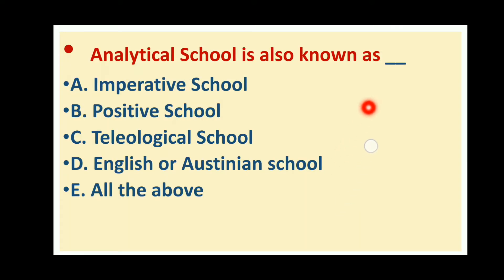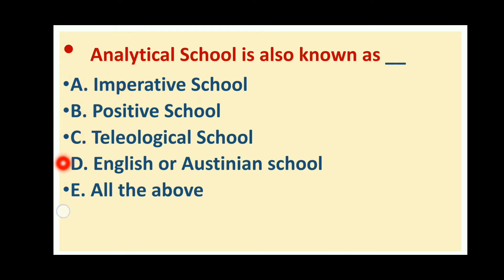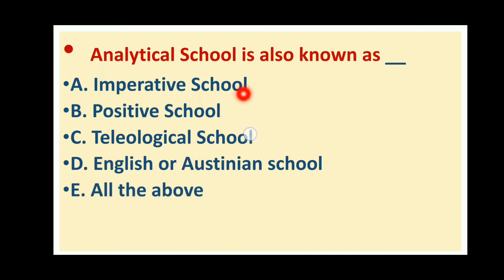Analytical school is also known as — analytical school को और कौन से नाम से जाना जाता है? The options are: imperative school, positive school, teleological school, English or Austinian school. All the above options are correct — analytical school को इन सभी नाम से जाना जाता है.